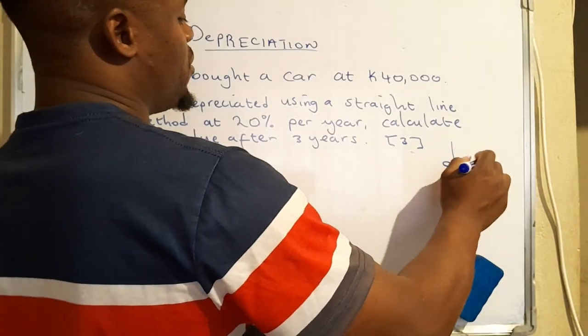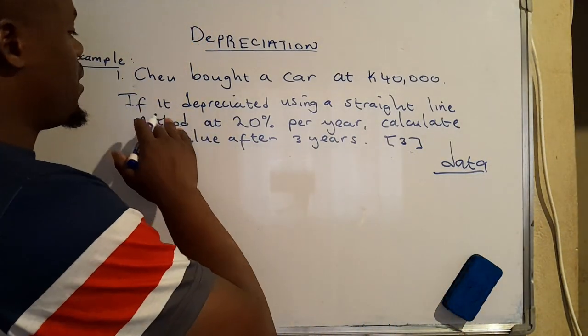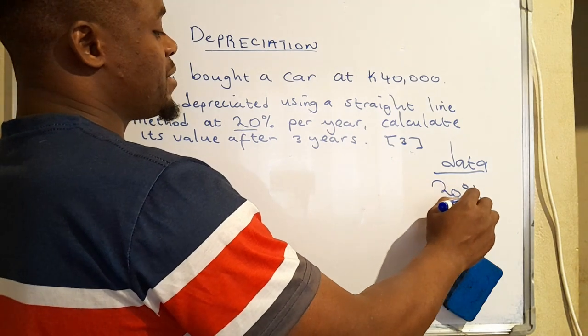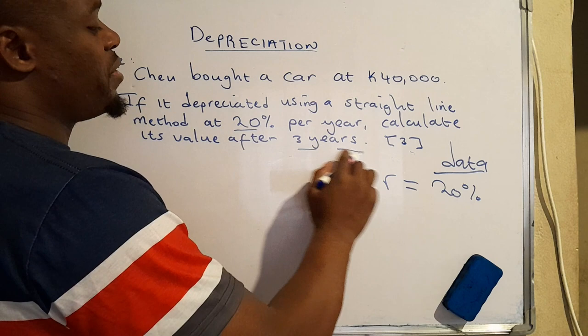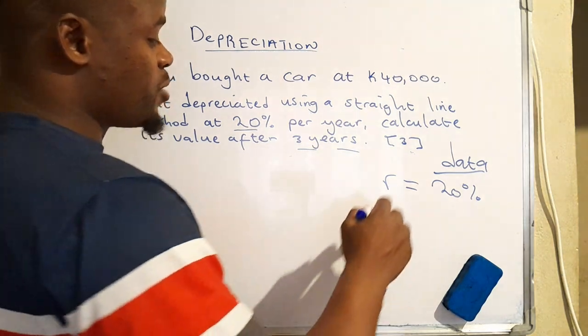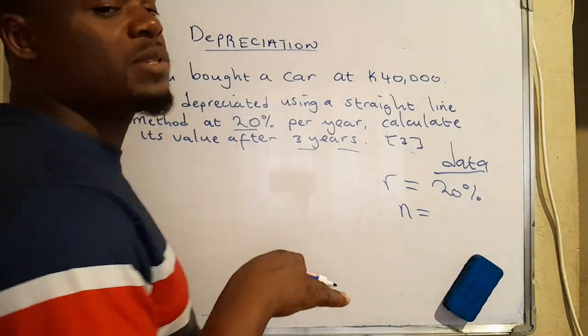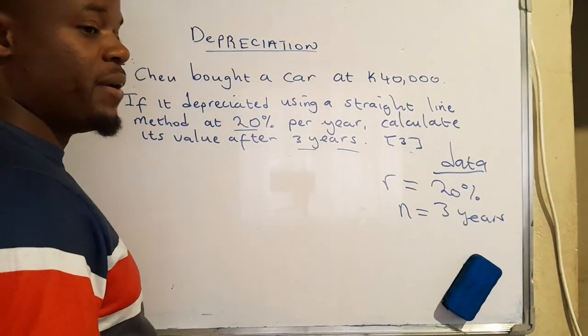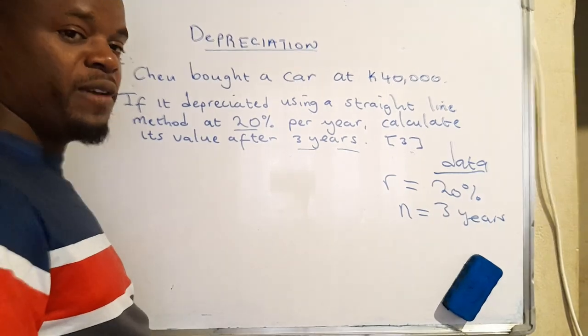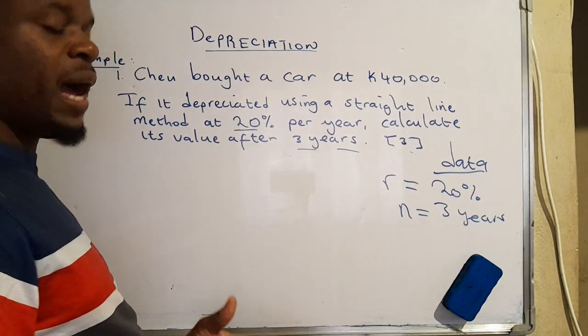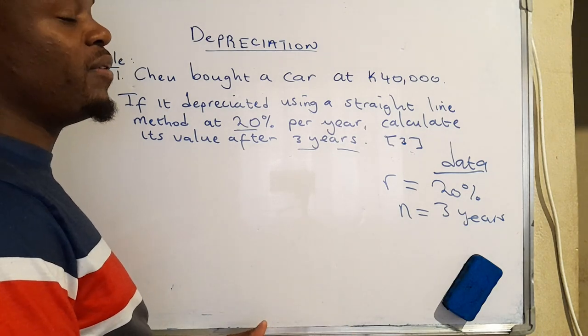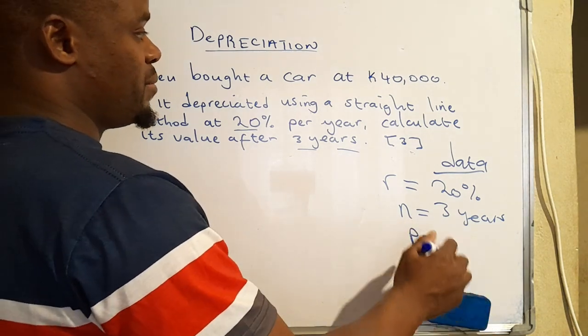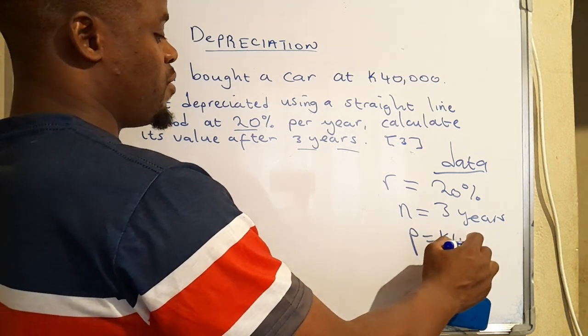So now there are things that you need to know. Before you do anything, first of all you have to write the data. It's depreciating at a rate of 20 percent, so you're going to write 20 percent as the rate. And then the period within which depreciation has to take place is actually three years, so we're going to say n denotes the period is equal to three years. And then we also need to take note of the initial value, that is the price at which an item is bought at the beginning of the period. So that one is actually termed as P, principle, 40,000.